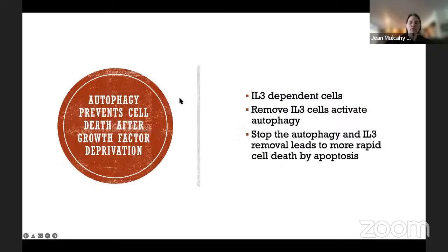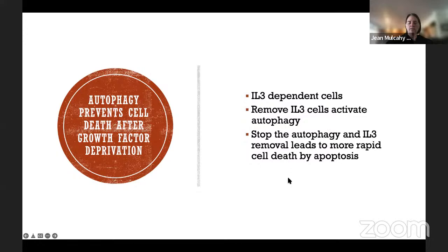Autophagy is a saving grace when essential survival signals are lost. In IL-3-dependent cells, removing IL-3 activates autophagy and allows those cells to survive. If you block autophagy and then remove IL-3 from dependent cells, you get more rapid cell death by apoptosis, because autophagy is no longer available to protect the cell.